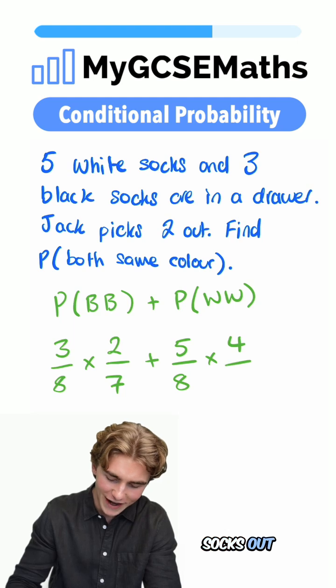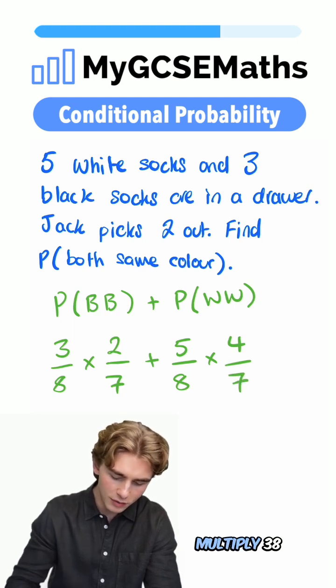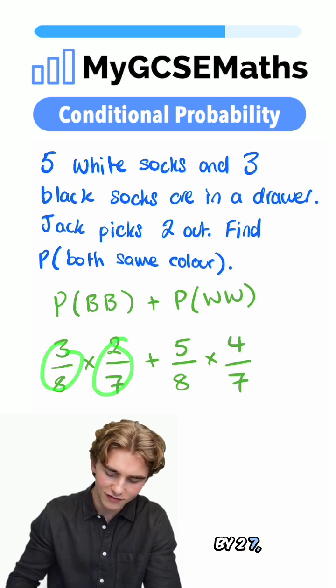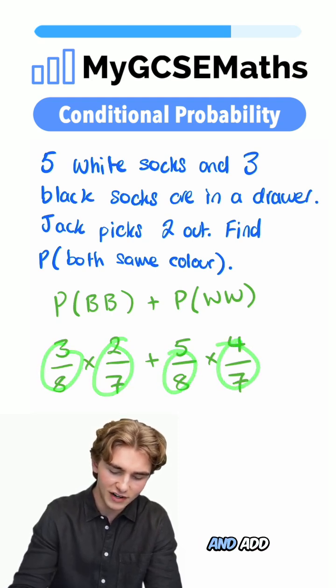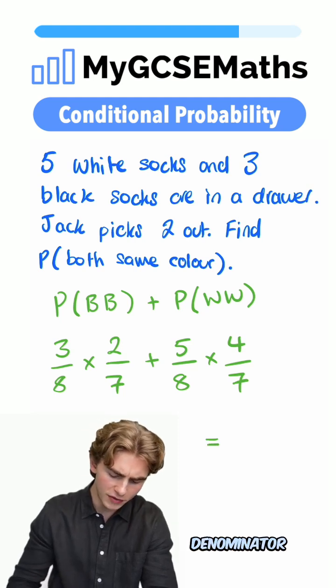We can then multiply 3/8 by 2/7 and 5/8 by 4/7 and add those together. Both of these fractions have a common denominator of 8 times 7, which is 56.